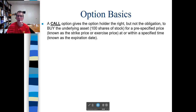I want to start with a call option. A call option gives the option holder the right, but not the obligation, to buy the underlying asset. The underlying asset here is typically going to be 100 shares of stock, because we're often looking at stock options. So one option contract translates to the ability to buy 100 shares of stock. You can't buy an option contract to buy one share of stock — they trade in 100-share increments.